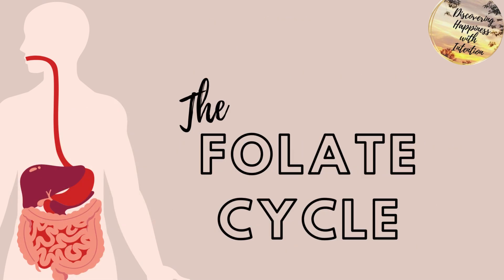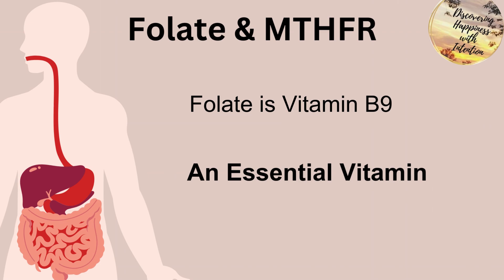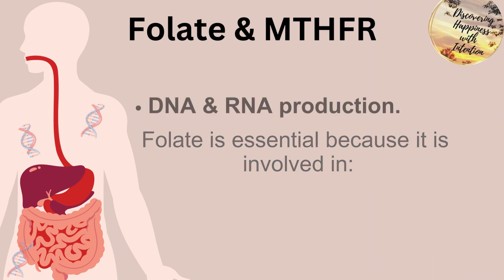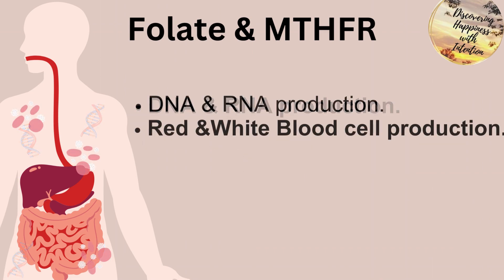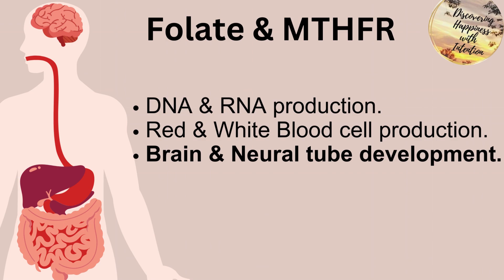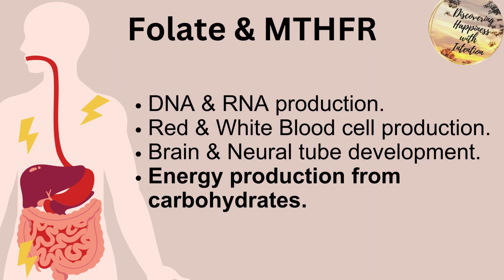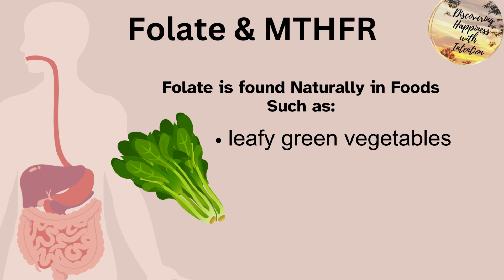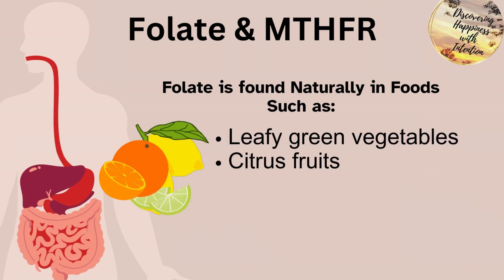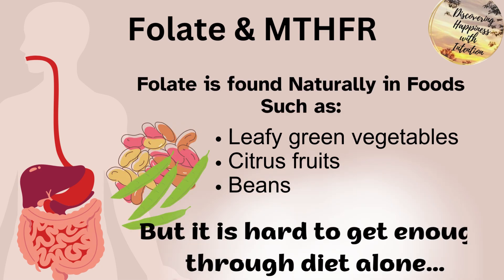So, the folate cycle. Folate is really important to MTHFR. It is vitamin B9, one of the essential vitamins. It is essential because it is involved in DNA and RNA production, red and white blood cell production, brain and neural tube development, and energy production from carbohydrates. Folate is naturally found in foods such as leafy green vegetables, citrus fruits, and beans, but it is hard to get enough folate through natural forms in our diet alone.